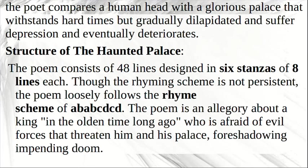Structure of The Haunted Palace. The poem consists of 48 lines designed in six stanzas of eight lines each. Though the rhyming scheme is not persistent, the poem loosely follows the rhyme scheme of ABABCDCD. The poem is an allegory about a king in olden time long ago, who is afraid of evil forces that threaten him and his palace, foreshadowing impending doom.